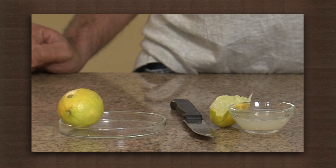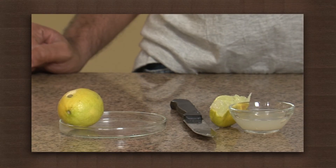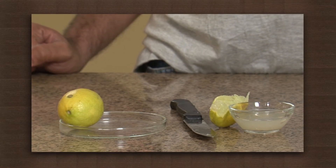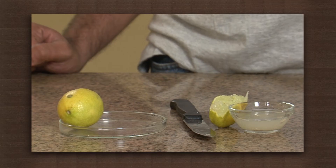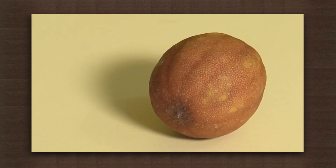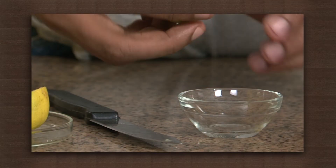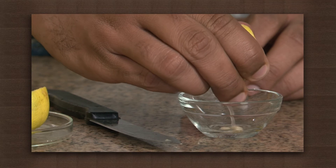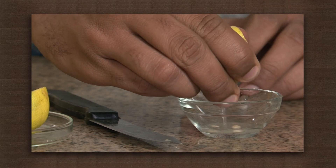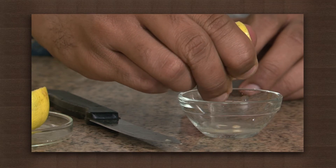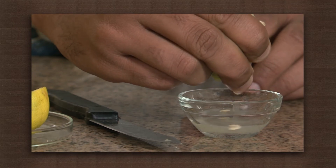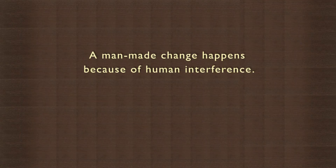Now take the other lemon and just keep it out in the sun, and leave it for a few days. If you do this, the lemon will rot like this. This change of the lemon rotting has nothing to do with man — nature has made it rot. The cutting and squeezing of the lemon is called a man-made change, and the rotting of the lemon is called a natural change.